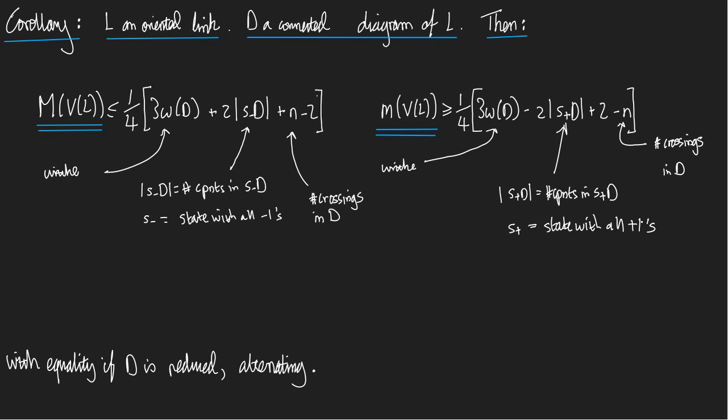And as usual, this is with equality. When I say as usual, I mean like in the theorem about the span of the Jones polynomial, this is with equality if the diagram D is both alternating and reduced. So if D is connected and alternating and reduced, we know exactly what are the highest and lowest powers in the Jones polynomial.